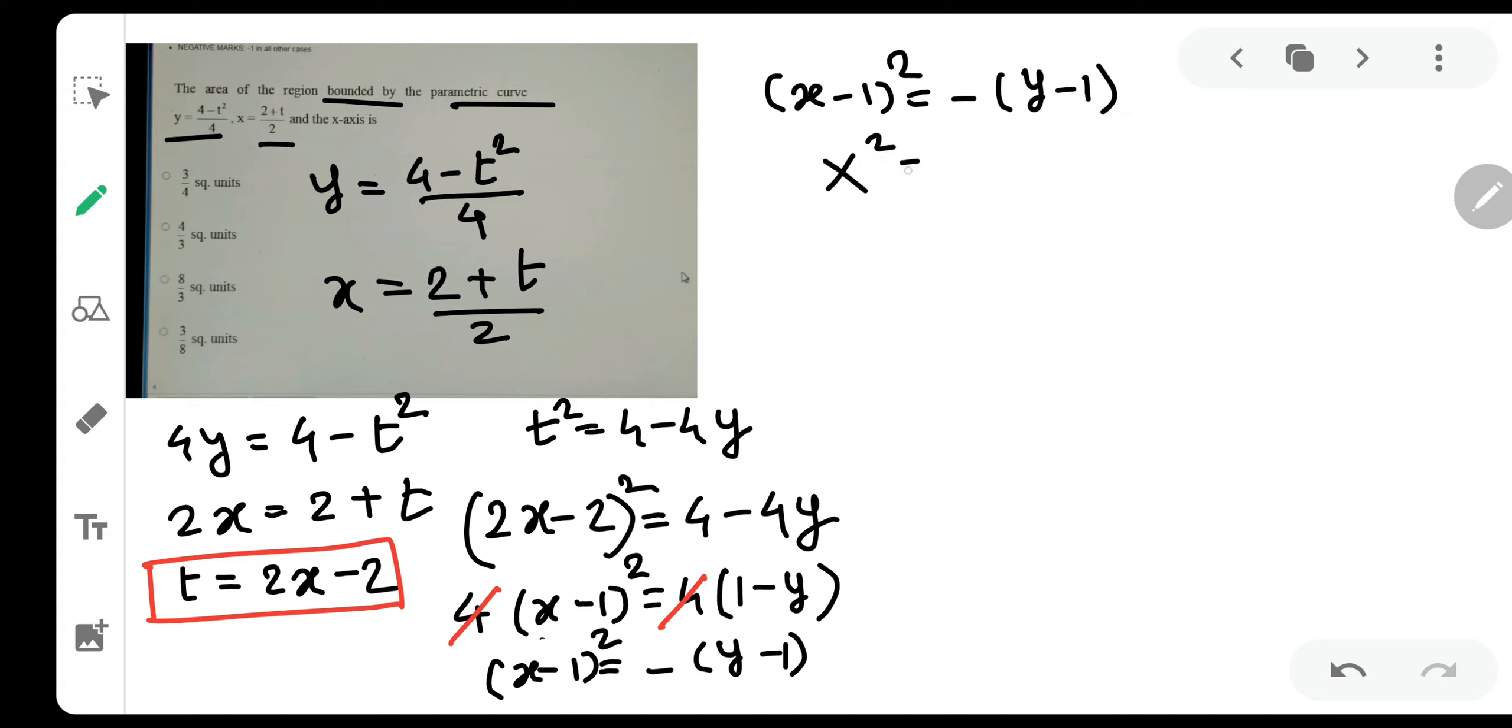Doesn't it look like x square is equal to 4by? Yes, it definitely looks like that. And this is a minus curve. So I will put a minus 4by. So such curve is definitely something like this.